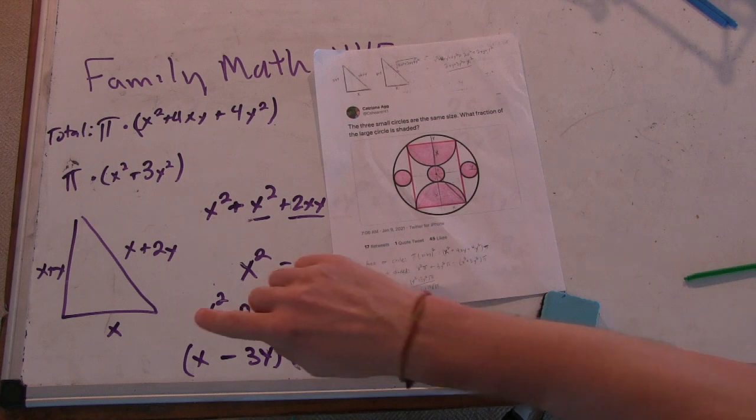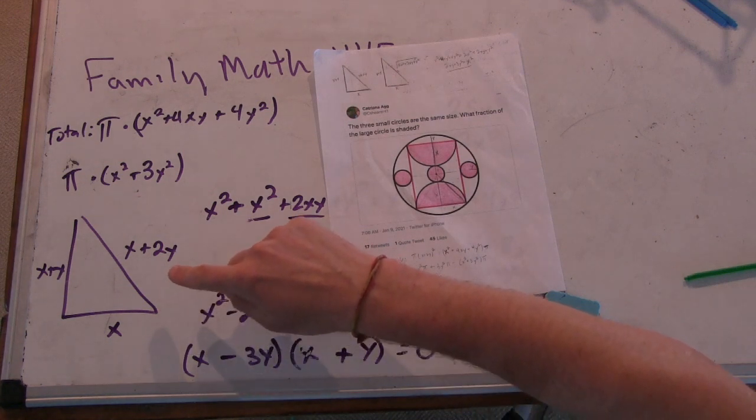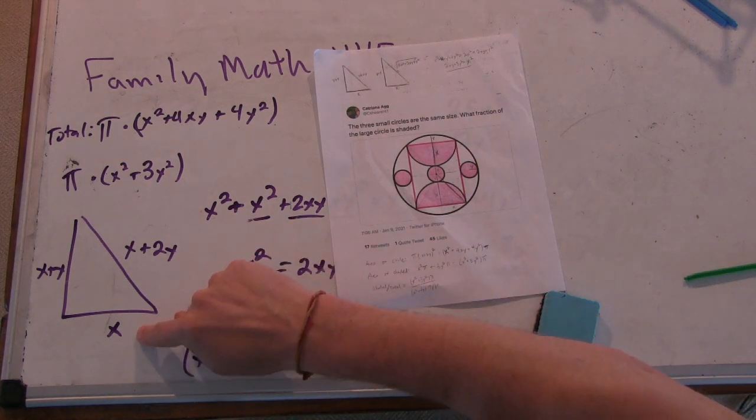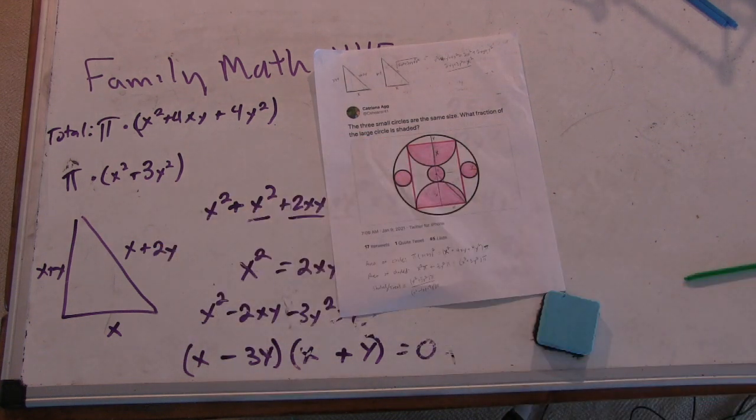This is an interesting diagram, too, because here we have a right triangle, and the sides are in arithmetic progression. So can you think of any right triangles whose sides are in arithmetic progression? Three, four, five. Like a three, four, five.